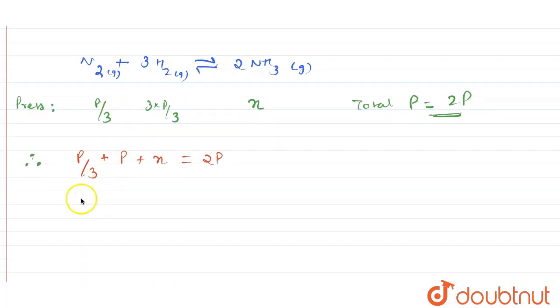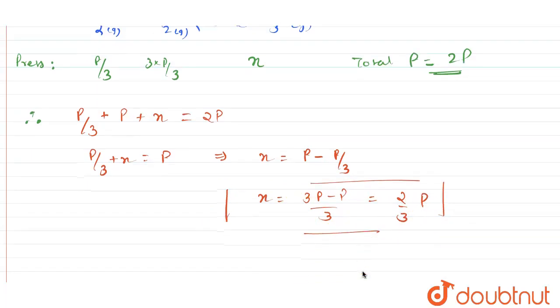Now doing the calculation for this, it is going to be P by 3 plus X equals P, implies X will be equal to P minus P by 3, that is equal to 3P minus P by 3, that will be equal to 2 by 3 upon P.